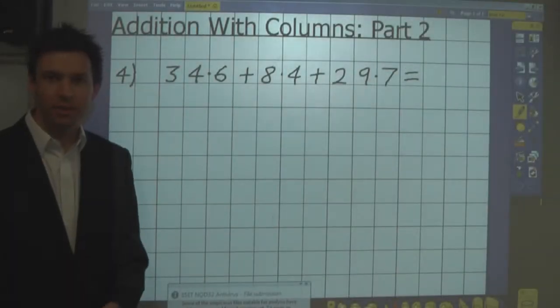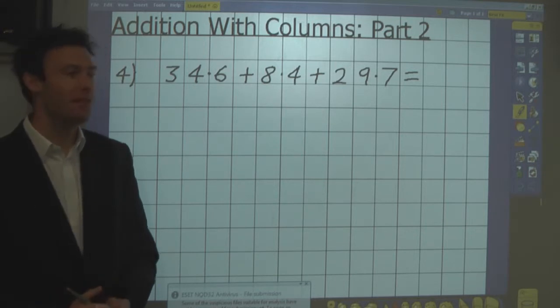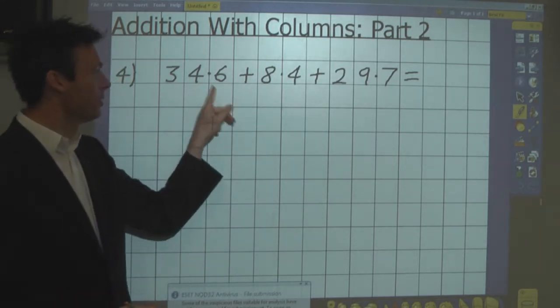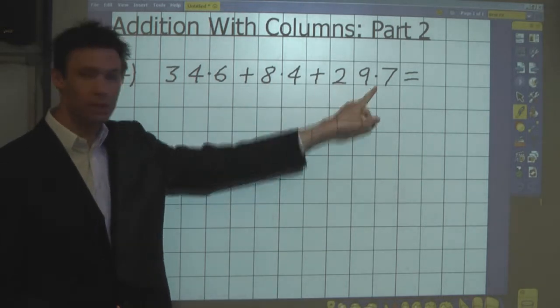I'm now going to show you how to add numbers in columns using the most efficient written method. Here we've got a decimal calculation, 34.6 plus 8.4 plus 29.7.